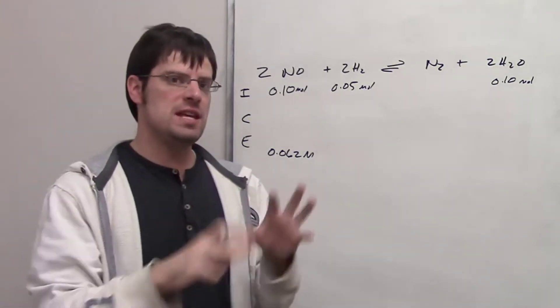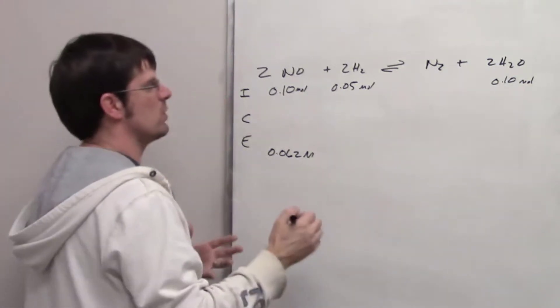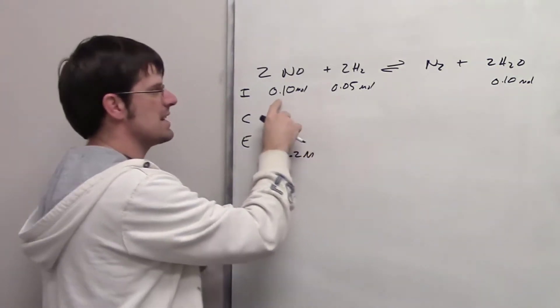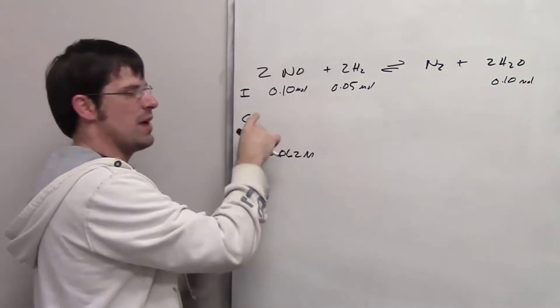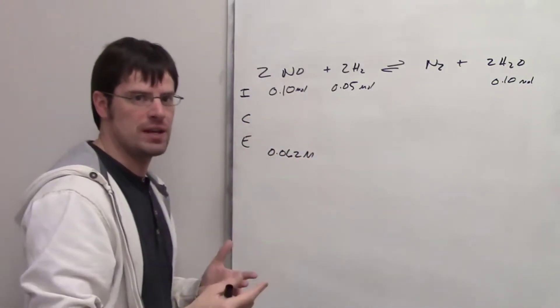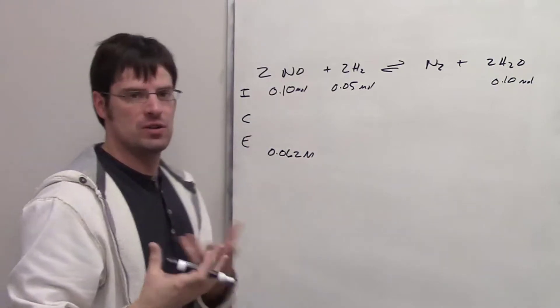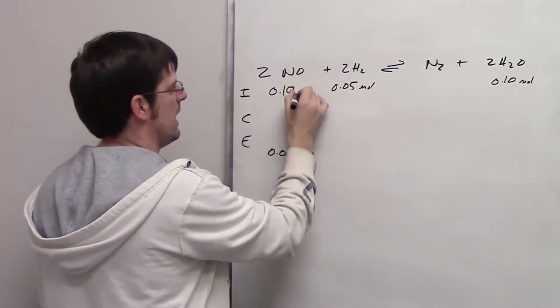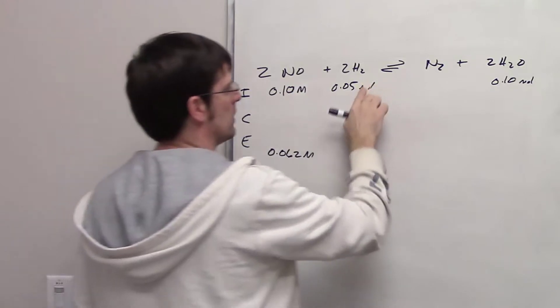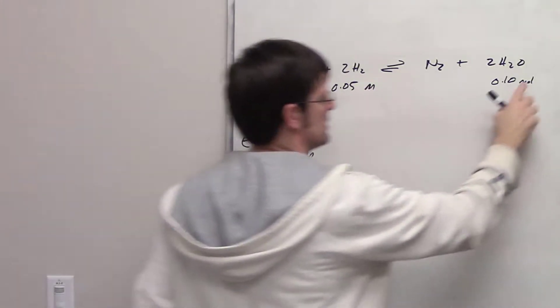Now because these were thrown in a one liter vessel, to determine their concentrations all I have to do is take the number of moles and divide it by the number of liters. That's easy because the number of liters is 1. So I take this number and divide it by 1, and I get 0.1 molar for each of these substances.